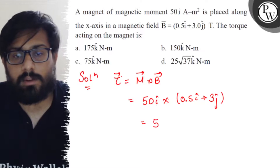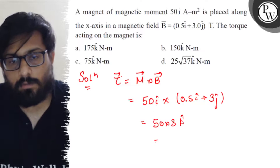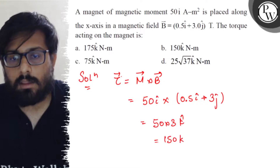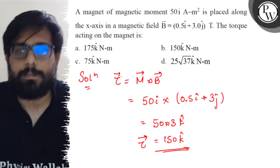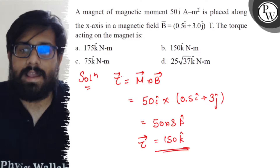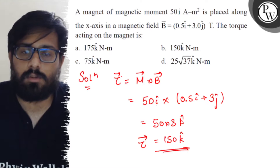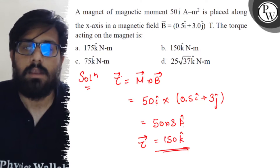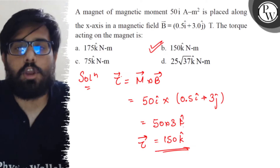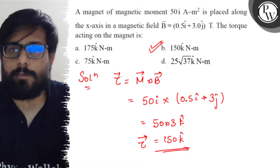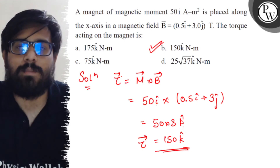So 50 into 3 gives us 150 k̂. The î cross î term gives zero, and î cross ĵ gives k̂, so the value of torque comes out to be 150 k̂ newton meter. This is option B, which is absolutely correct. I hope you get the concept of this question — all the very best!